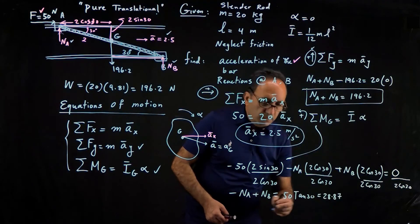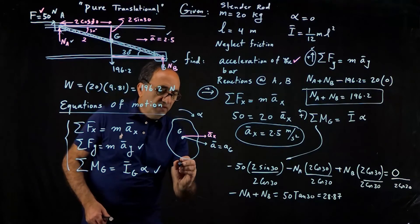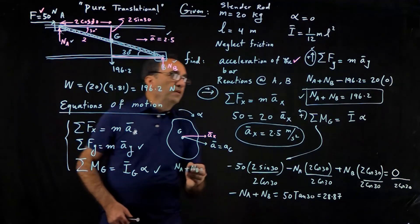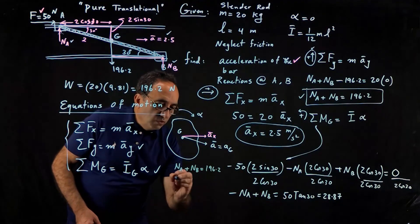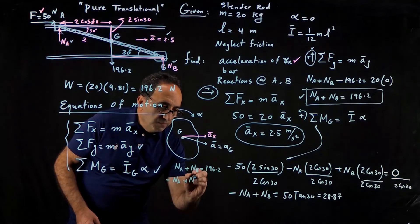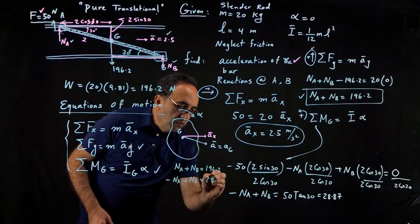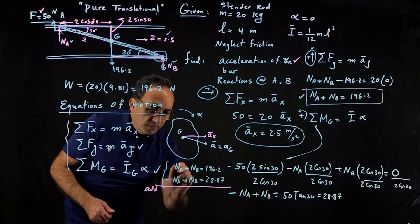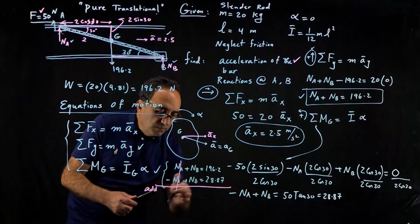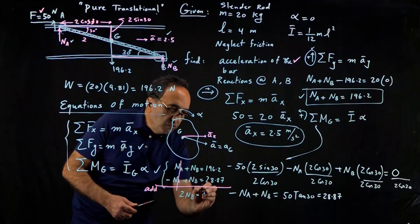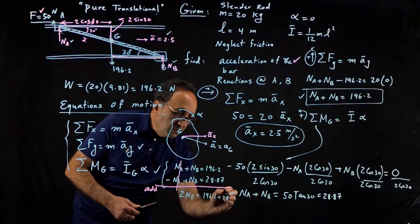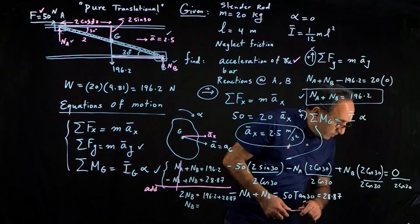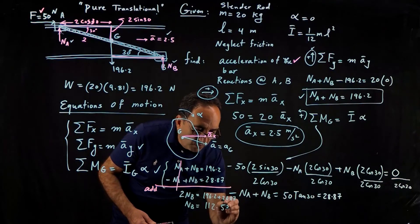So the two equations that we have, if I line them up for you, show you how quickly you can solve these two. So one equation is na plus nb is 196.2. The other equation I just got, minus na plus nb equals 28.87. So just add these two equations. Na minus na is gone. So we get 2nb equal 196.2 plus 28.87. Whatever that comes out to be divided by 2. So nb, according to my calculation here, becomes 112.53 newtons. That's the reaction here acting on that collar.